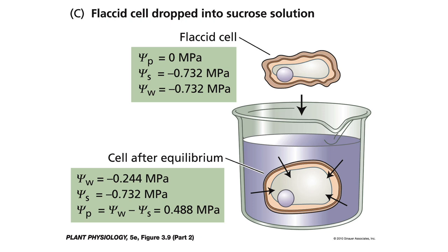Let's take another example. A flaccid cell is one that is lacking in turgor — it has no turgor pressure. Therefore the pressure potential in this cell is zero MPa. The solute potential in this case equals −0.732 MPa, which is a good representation of an actual cell's solute potential. Therefore the water potential in this cell is −0.732 MPa.